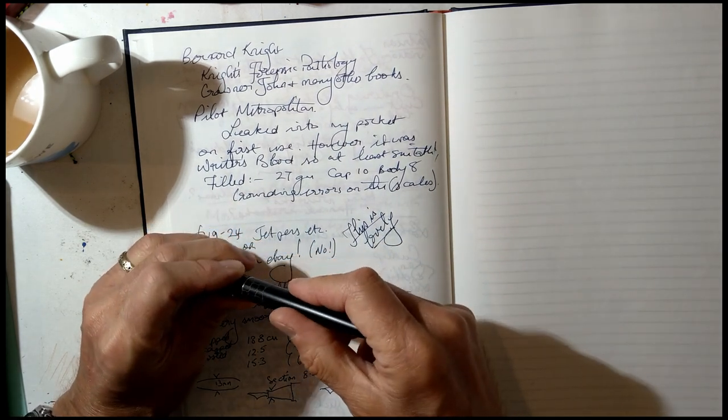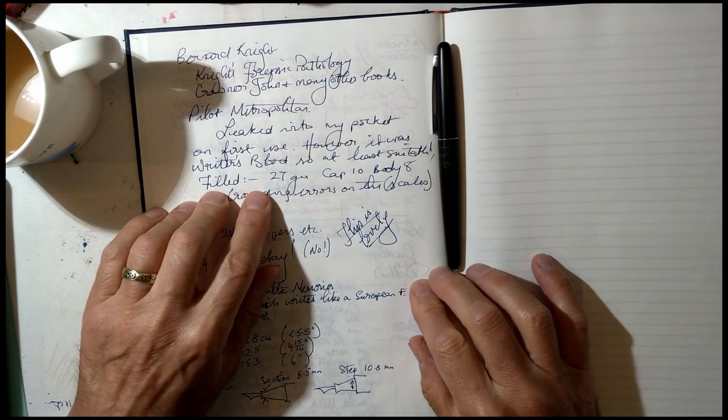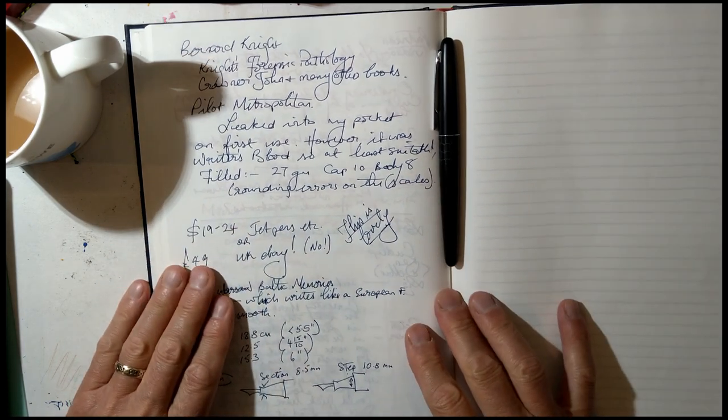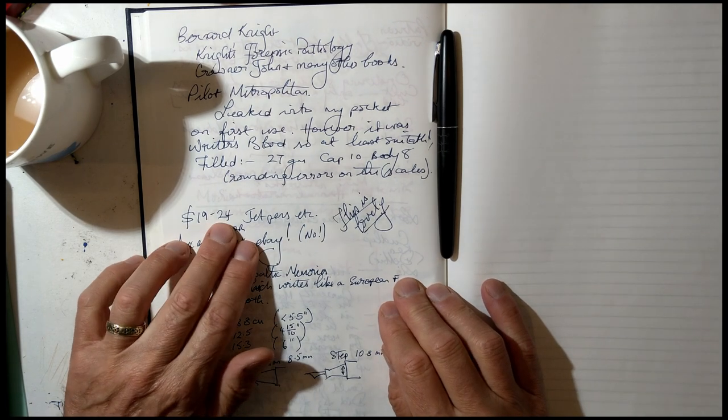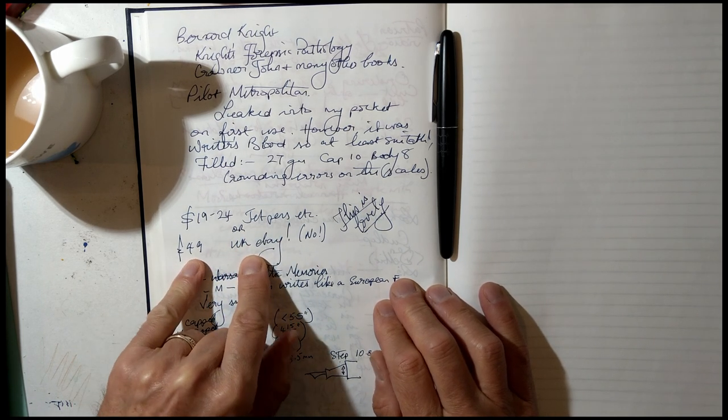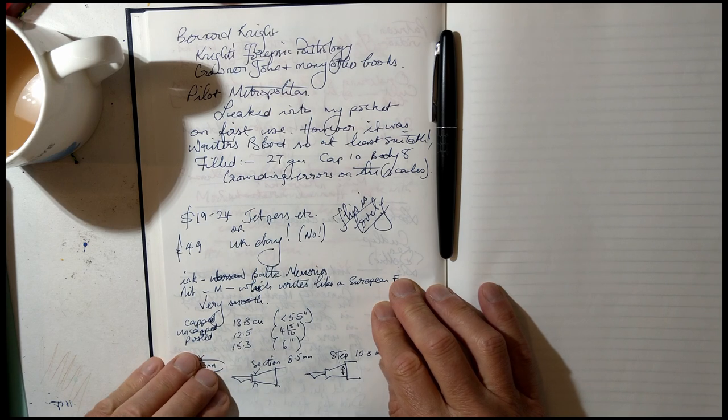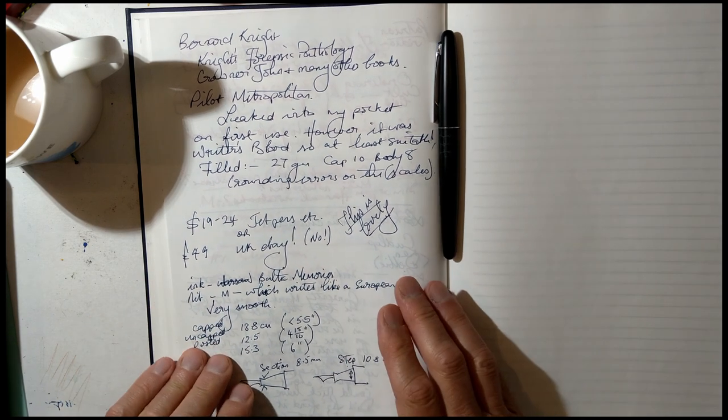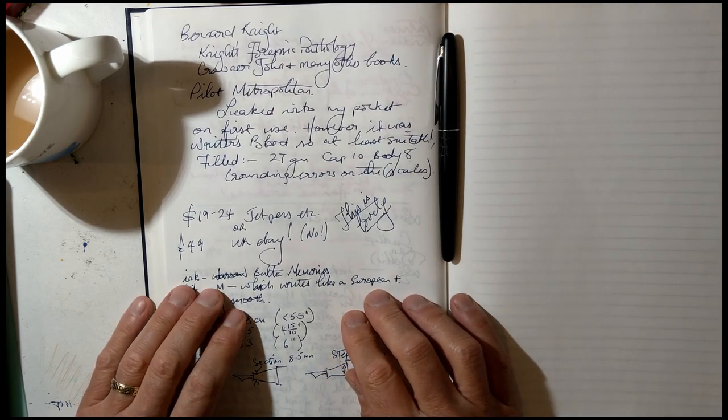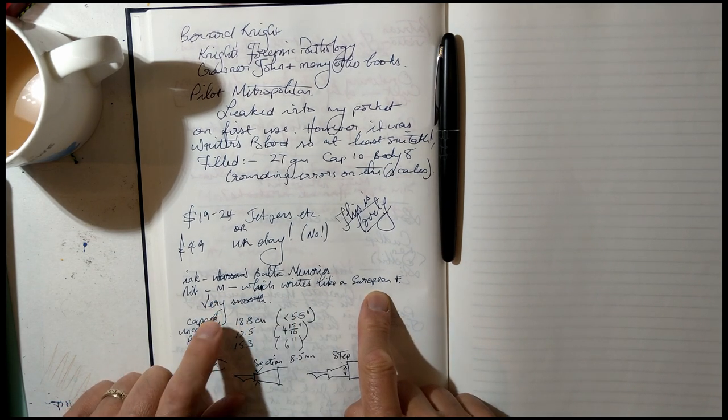As you can see here, it's a Pilot Metropolitan. It leaked, yes. I actually got this from Bernard and it was in a pretty dreadful state. The cartridge converter was very loose and sloppy, and I discovered after filling it with writer's blood that evening I had a large red blood-like stain on my shirt because the cartridge converter was leaking. So I've replaced that with a new one and this works beautifully. The nib is a medium but it writes much more like a European fine, I reckon. Very, very smooth.